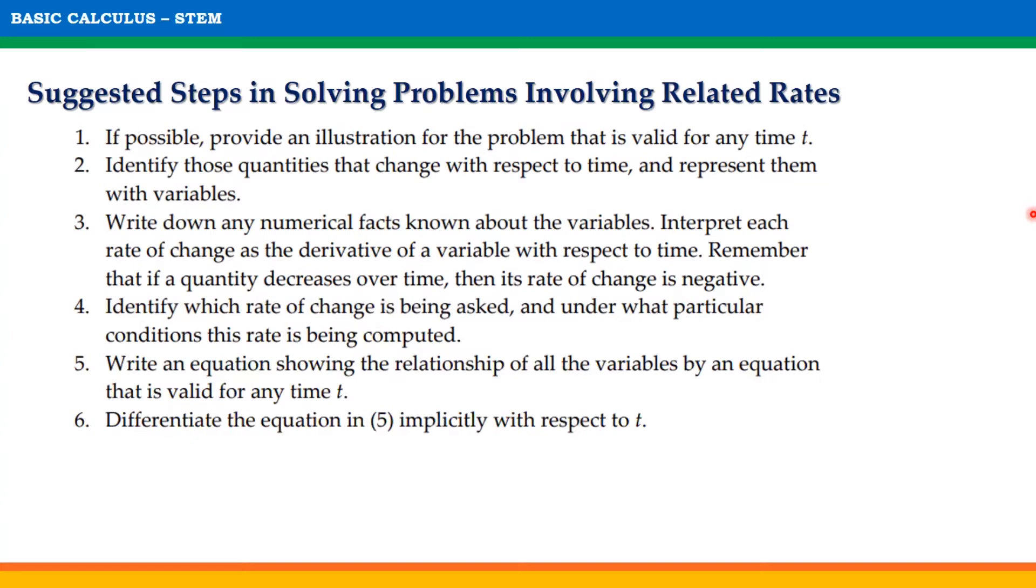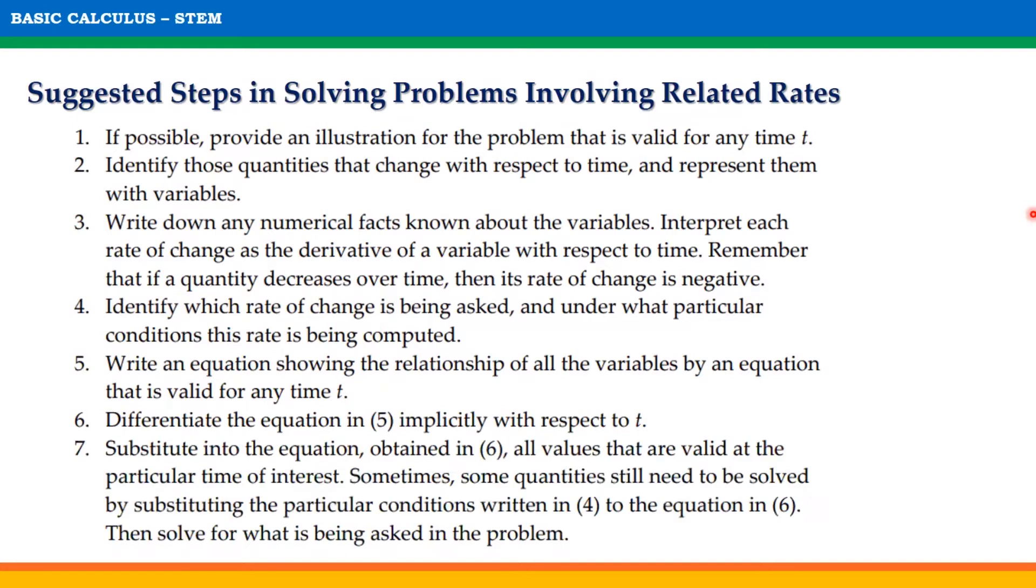Step 6: Differentiate the equation in step 5 implicitly with respect to t. And step 7: Substitute into the equation obtained in step 6 all values that are valid at the particular time of interest. Sometimes, some quantities still need to be solved by substituting the particular conditions written in step 4 to the equation in step 6. Then solve for what is being asked in the problem.